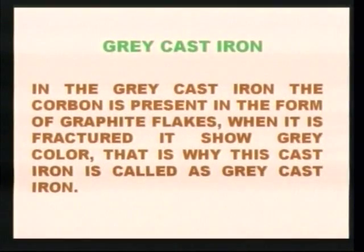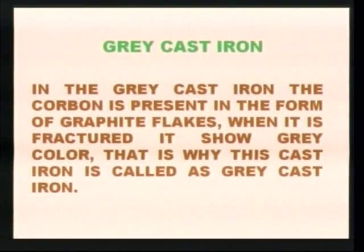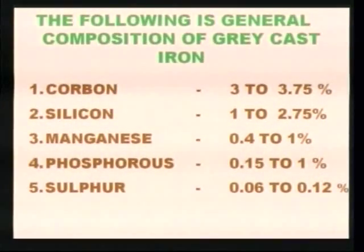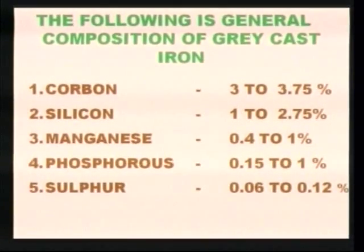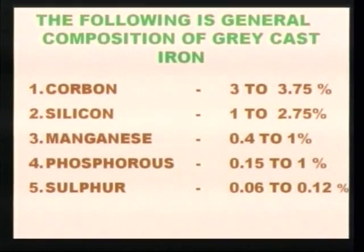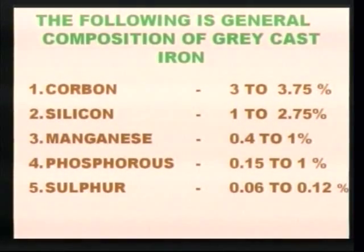In grey cast iron, the carbon is present in the form of graphite flakes. When it is fractured, it shows a grey colour — that is why this cast iron is called grey cast iron. The general composition is: carbon 3 to 3.75 percent, silicon 1 to 2.75 percent, manganese 0.4 to 1 percent, phosphorus 0.15 to 1 percent, and sulphur 0.06 to 0.12 percent.